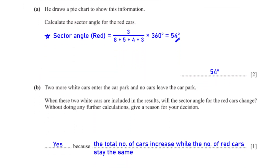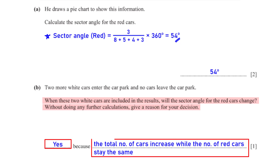Two more white cars enter the car park and no cars leave. When these two white cars are included, will the sector angle for the red cars change? Give a reason without doing any further calculations. Our answer is yes — the sector angle for the red cars will change because the total number of cars increases while the number of red cars stays the same.